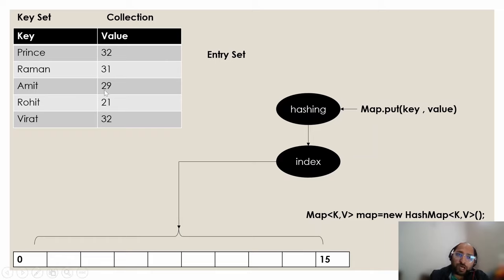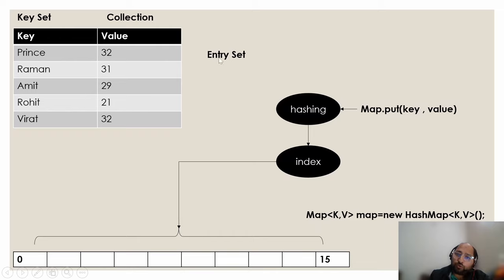To visualize how a map looks: the key is an employee name like 'Prince' and the value is the age, say 32. Similarly 'Raman' maps to 31. Keys are unique, so they form a key set. Values can be duplicate or unique and are referred to as a collection. Each key-value pair is one entry, and all entries together form an entry set.